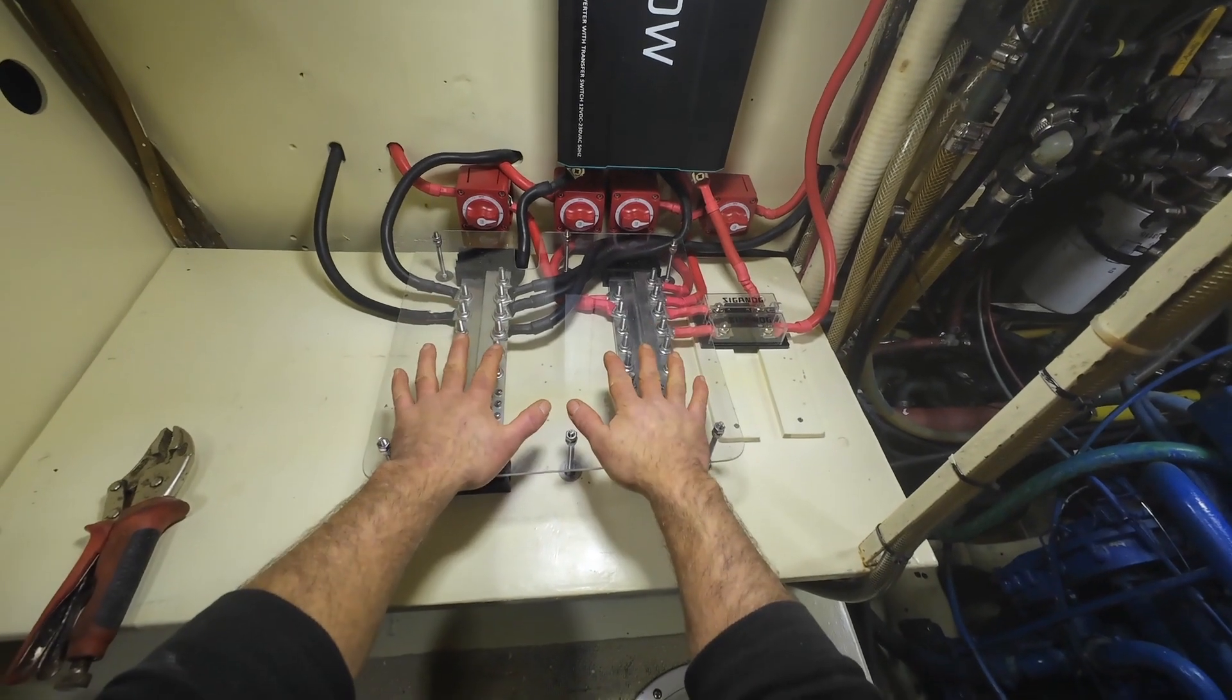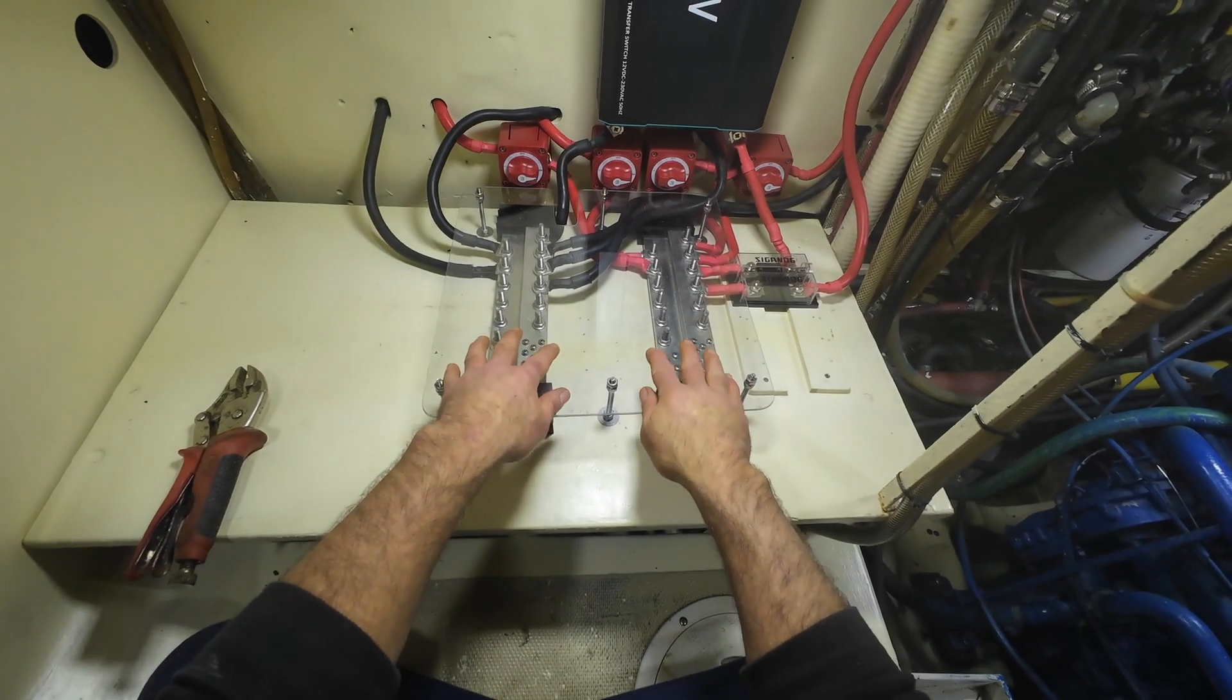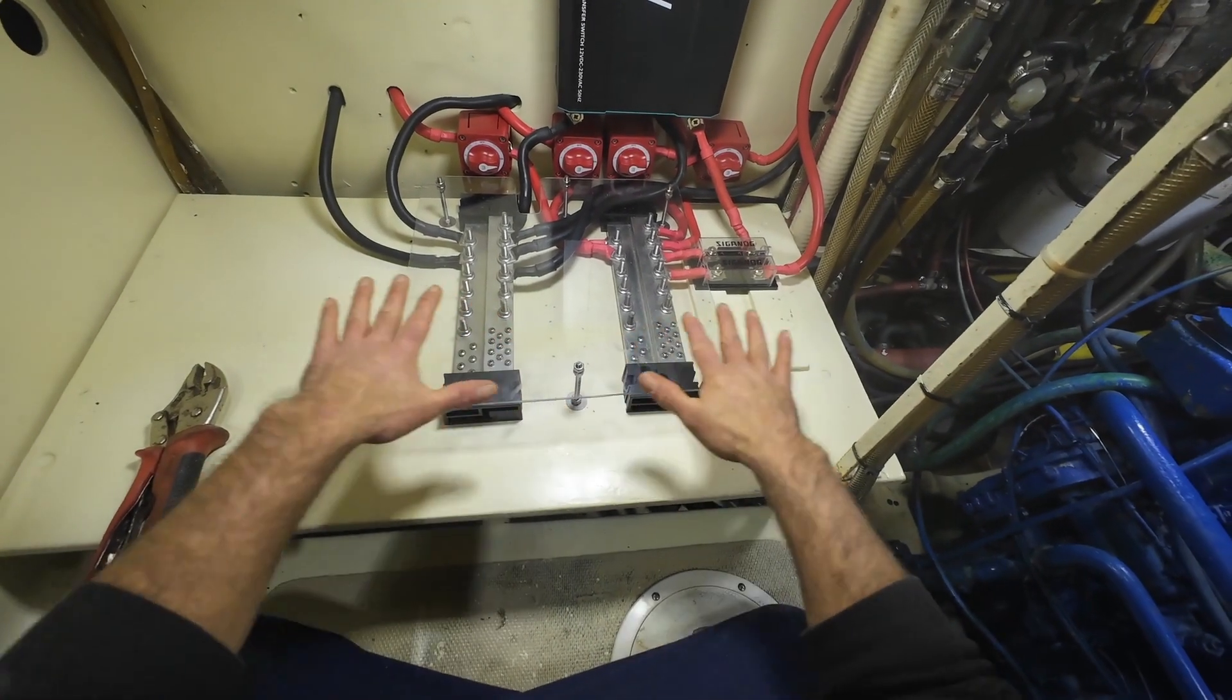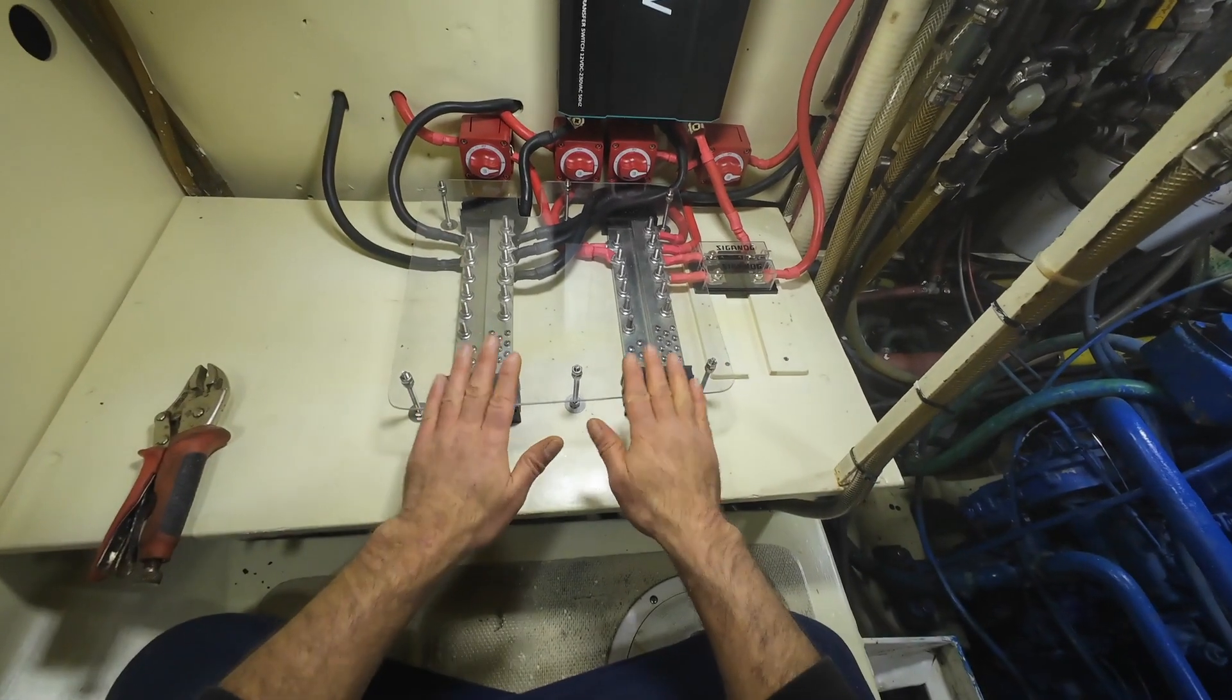Now we have this protection for the bus bars. I think this might be just version one of this shield. I was thinking of actually making another one a little bit bigger with sides that go around it. But this will do for now.